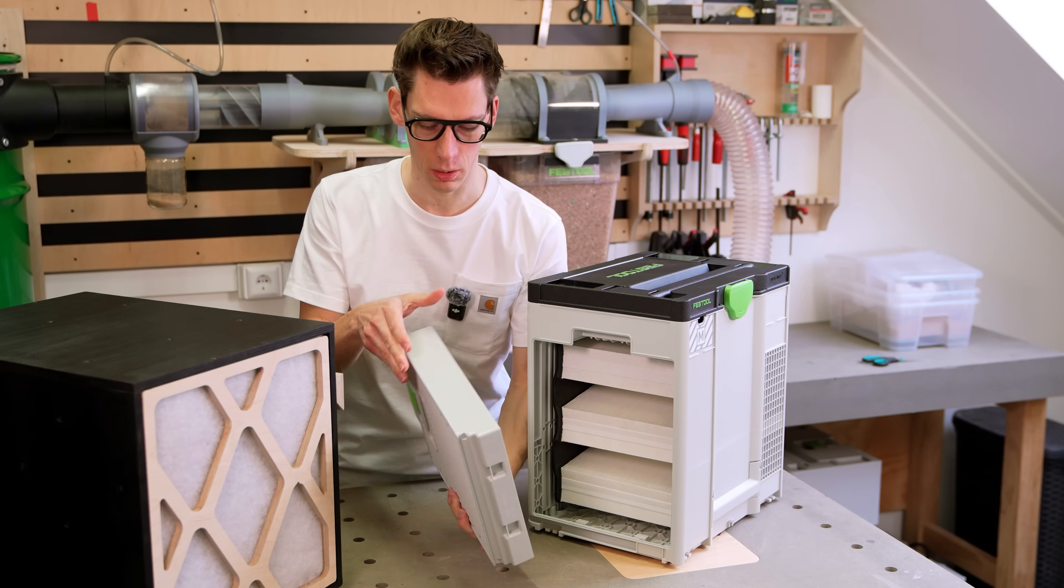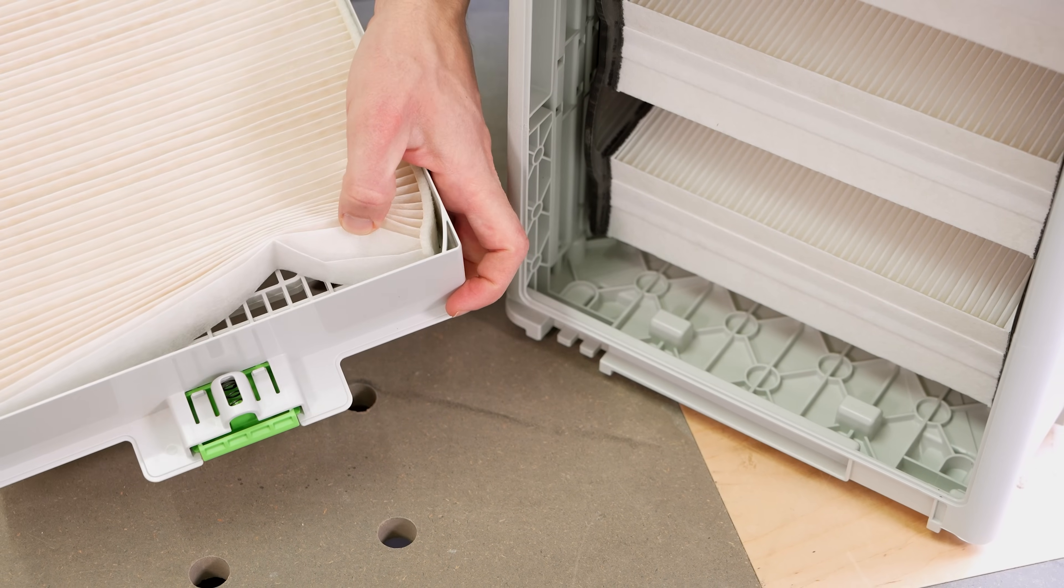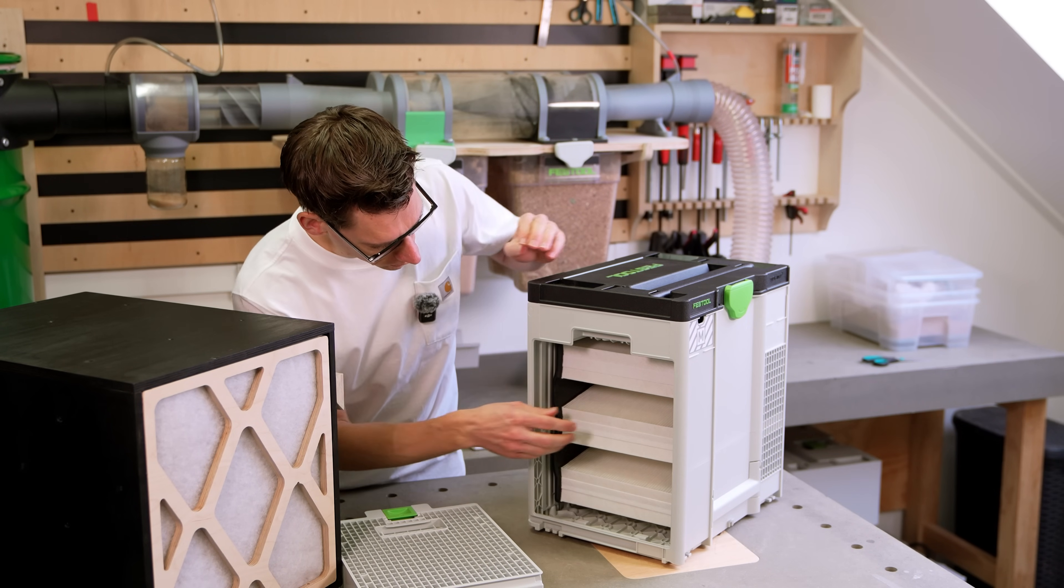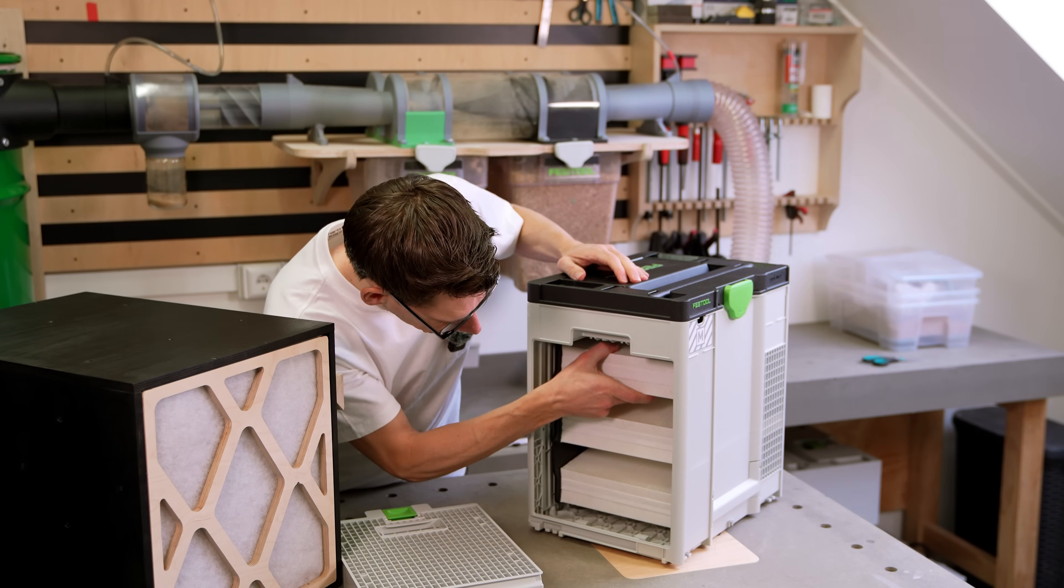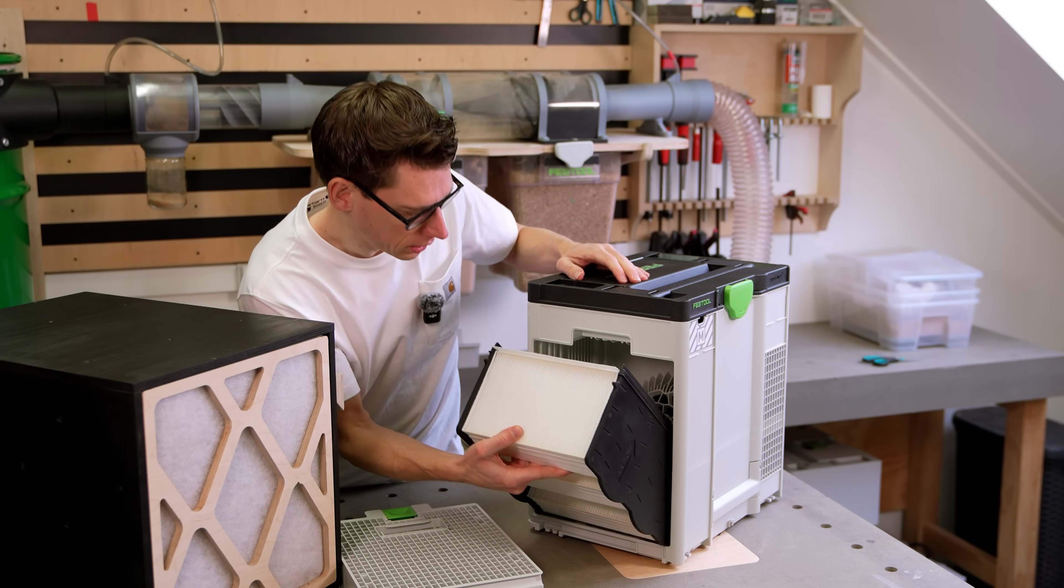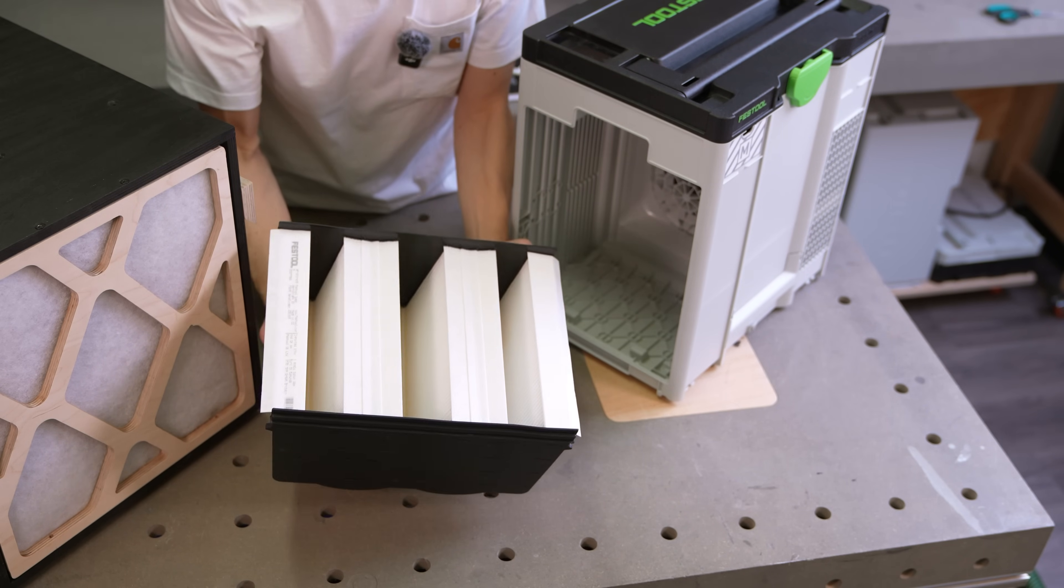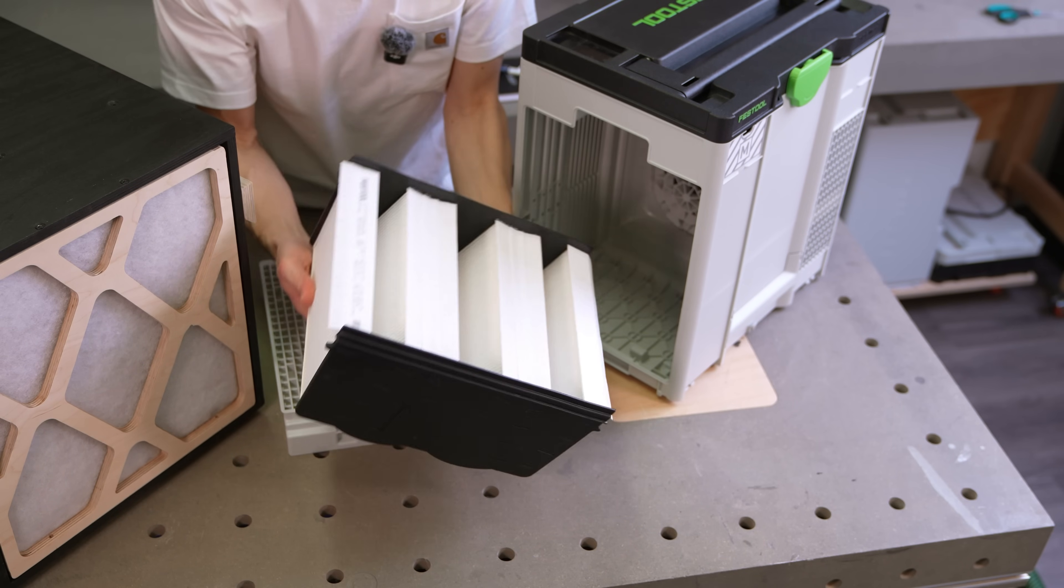The first filter is a very thick cartridge that is part of the housing. And this one is really interesting. They use the V-bank orientation of the filters to get the most filter area out of the space.